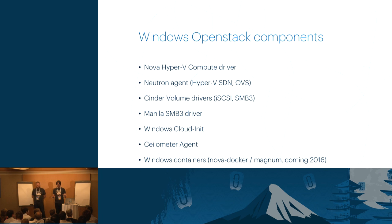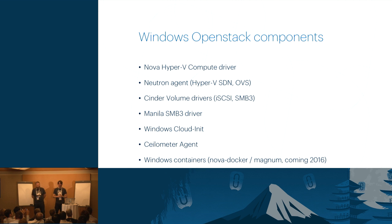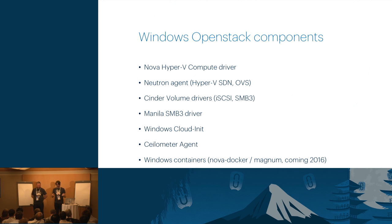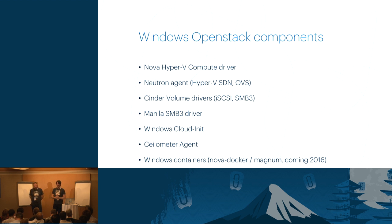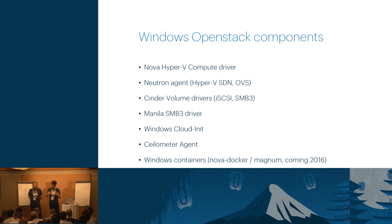Windows OpenStack components — we are active on a very large number of projects. We have the Hyper-V Compute Driver, which is our flagship and the first project we started working on since Folsom. We have the Neutron agent with Hyper-V SDN support and also Open vSwitch. We have Cinder support — three drivers, two on Windows: iSCSI support and SMB3. Manila is fresh from Liberty with a new driver that merged in Liberty. We have a Windows cloud-init which is CloudBase-Init, an agent for Ceilometer, and since Windows Server 2016 adds container support, we have Nova Docker support today currently up for review in Nova Docker.